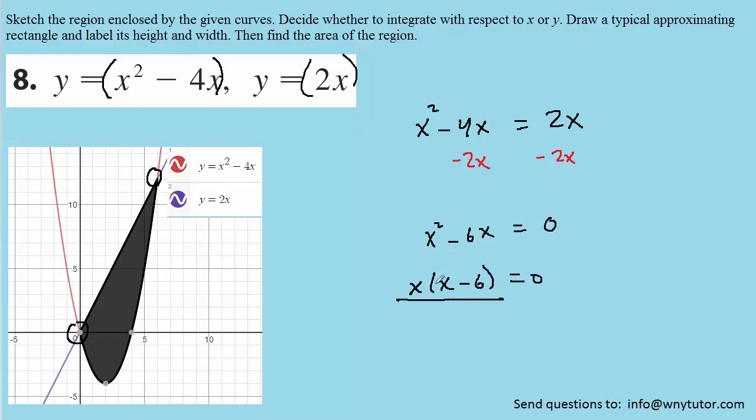And then we can take each factor and set it equal to zero. And the factor on the left-hand side is already solved, and then over here we can add 6 to both sides of the equation, and we get x equals 6. So these are the two x-values of the points where the curves intersect.